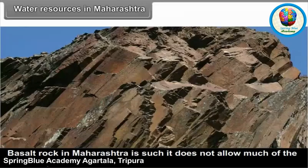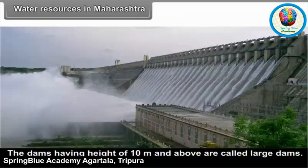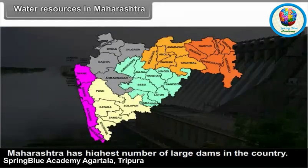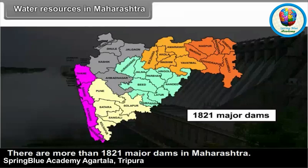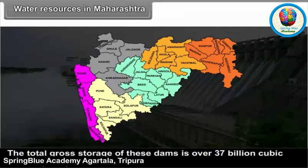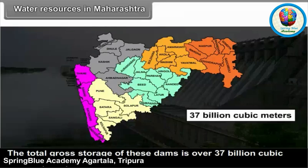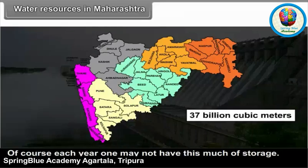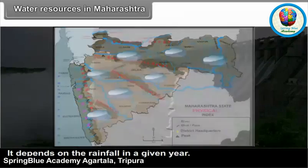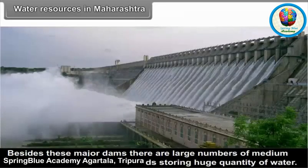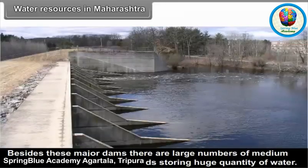Basalt rock in Maharashtra does not allow much water to percolate. Dams having a height of 10 meters and above are called large dams. Maharashtra has the highest number of large dams in the country — more than 1800 major dams. The total gross storage of these dams is over 37 billion cubic meters, though actual storage each year depends on the rainfall. Besides these major dams, there are a large number of medium and small dams as well as bunds storing huge quantities of water.